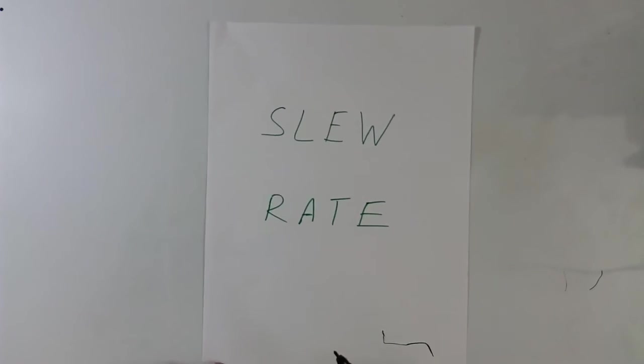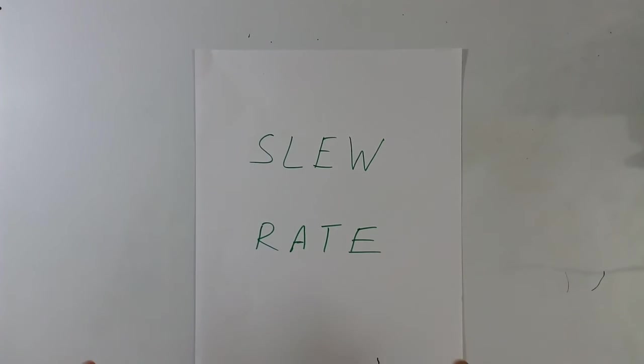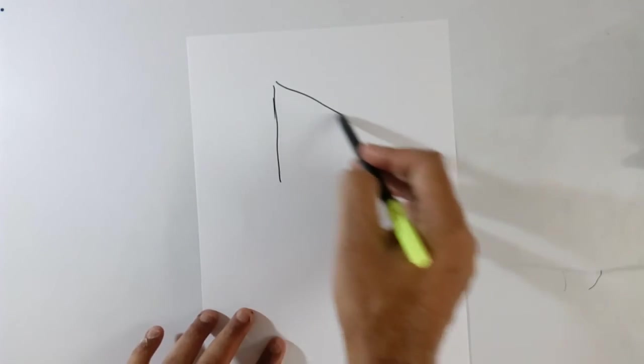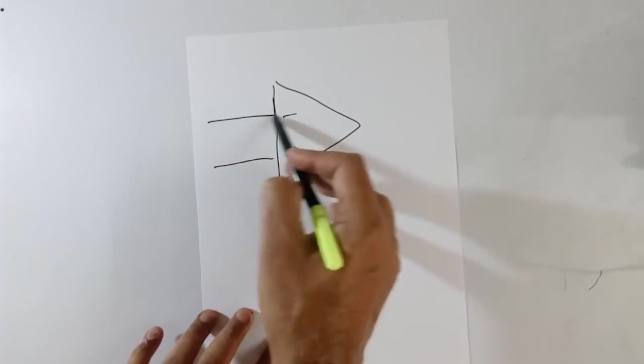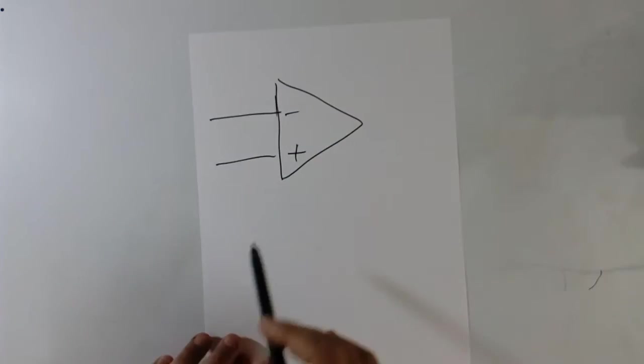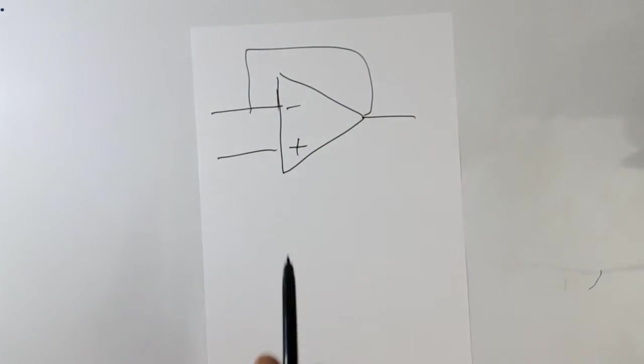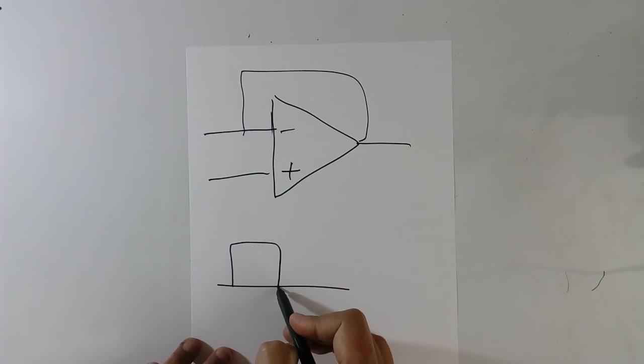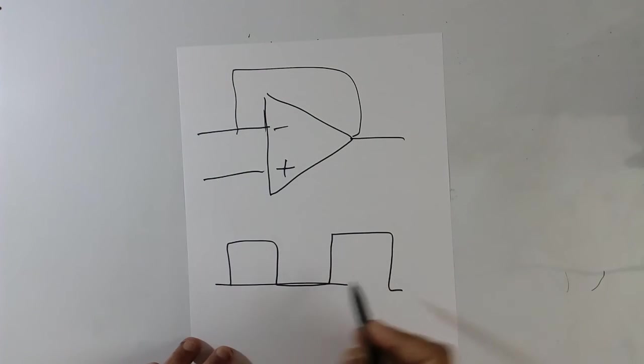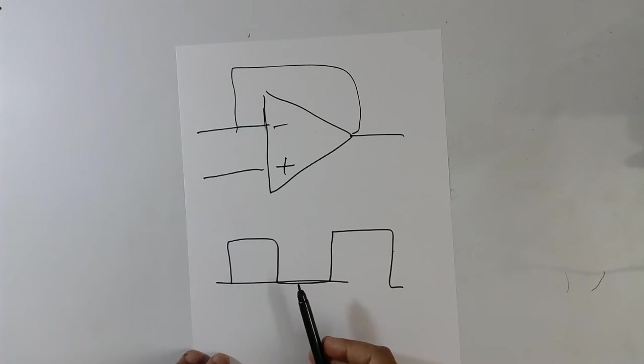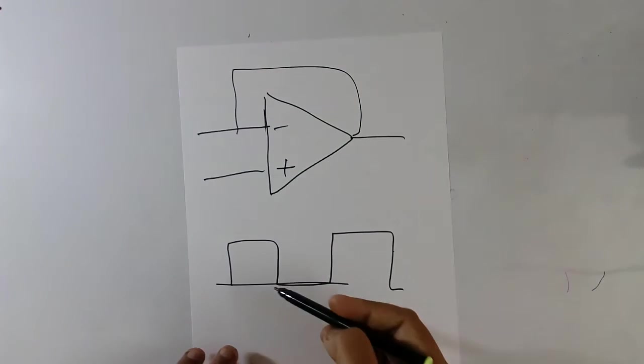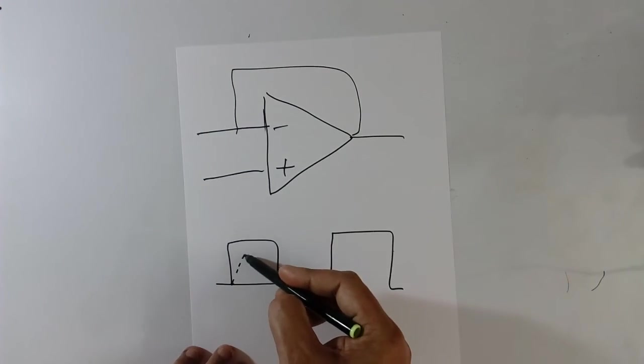Now let us come to slew rate. This is the third important characteristic of linear IC. I will explain why. Suppose this is IC operating in unity gain. Now I have given a square wave as input. The output will follow like this. But really it is not like that. Because of slew rate, output is not very fast. It is slow. Output will go like this, little slow.